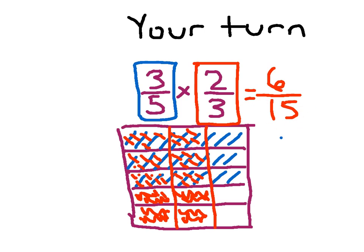That gives us 6 fifteenths, which still needs to be simplified. 6 divided by 3 is 2, and 15 divided by 3 is 5. So 3 fifths times 2 thirds equals 2 fifths.